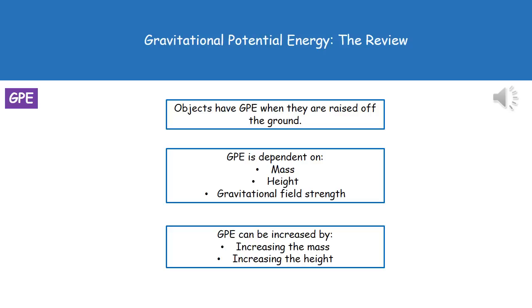When we're talking about objects on Earth, we can increase the amount of GPE by either increasing the mass or increasing the height.